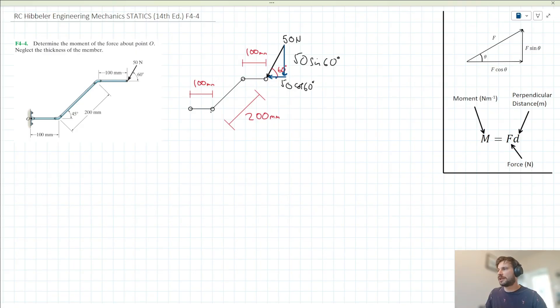We should consider how these individual components enact moments about point O. The horizontal component will enact an anticlockwise moment about point O. If we imagine placing our finger on point O, that horizontal component will rotate the paper anticlockwise. However, the vertical component, this 50 sin 60 component, will enact a clockwise moment. So we need to find two perpendicular distances from point O.